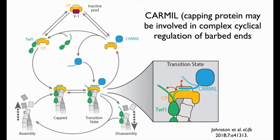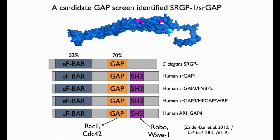Now, what about GAPs — the flip side of GEFs? A candidate GAP we were interested in was one we had already studied in the context of cadherin-dependent cell adhesion: SR-GAP1. SR-GAP1 is the single worm family member of a family of slit-robo or SR-GAP proteins conserved all the way up to humans. They have an F-BAR domain at their N-terminus for membrane interaction, a GAP domain — and the worm SR-GAP is specific for CED-10 RAC, MIG-2 Rho-G, and CDC42 — and adapter motifs at the C-terminus.